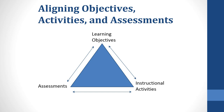First, identify the desired results — outcomes, goals, and objectives — in other words, what you want students to learn. Second, identify what would be acceptable evidence that the students learned what they need to. Another way of thinking of this is: how would students be able to demonstrate to you that they learned what you set out to teach them?